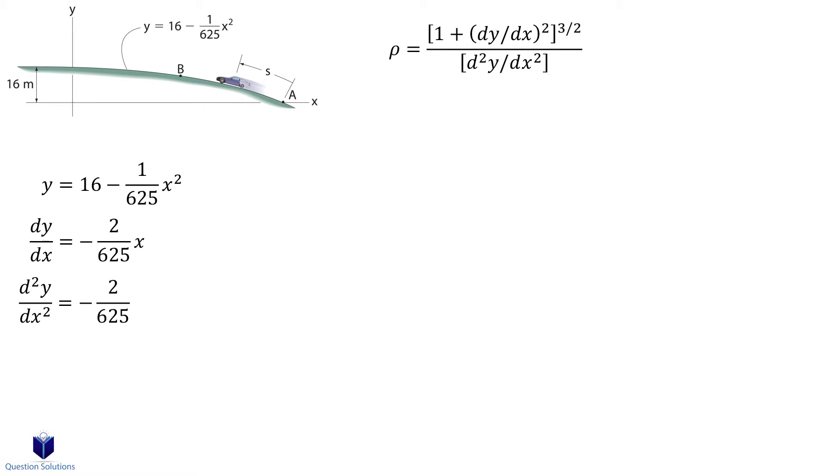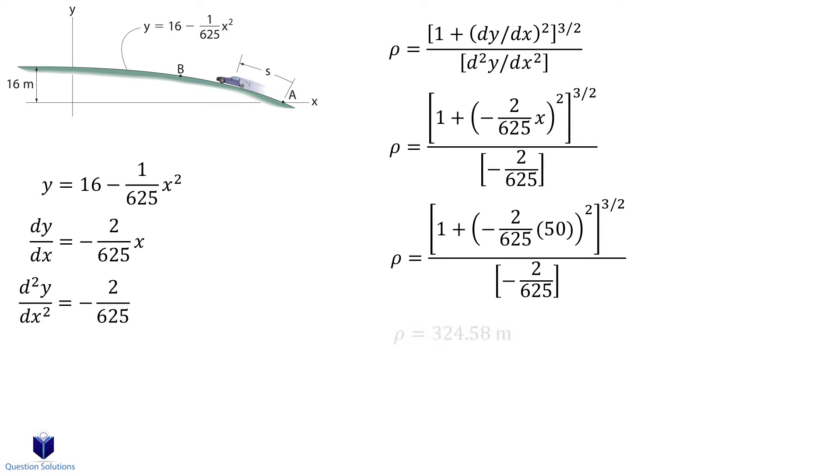Now we can plug it into our equation. The question states that x equals 50 when s equals 51.5. So we need to substitute the x value to figure out the radius of curvature. Remember, distances cannot be negative.